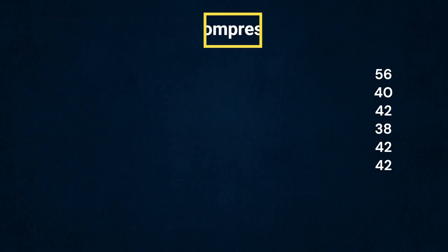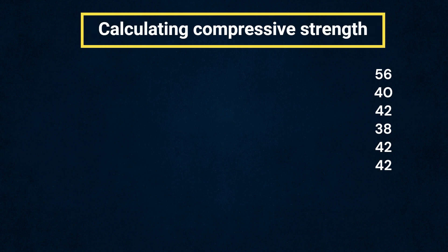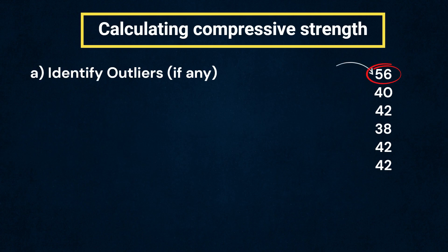Finally, let us move to the calculation of compressive strength. First, remove all the outlier values found as per IS 16269, part 4, if found any.